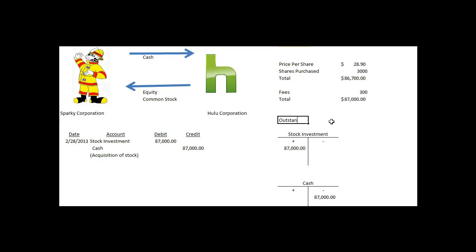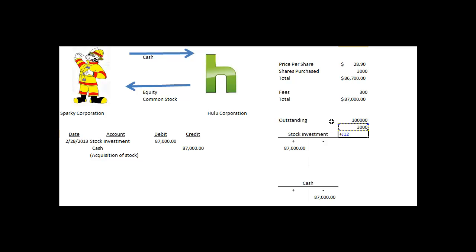Notice also in the problem that the outstanding shares are 100,000. Our portion of that is 3,000, so our total ownership is 3%. This transaction represents the first category of stock ownership, which is less than 20%. So that's it for the acquisition of the stock.